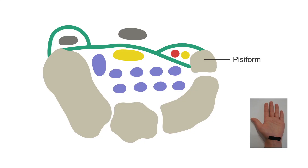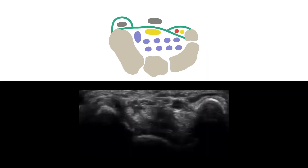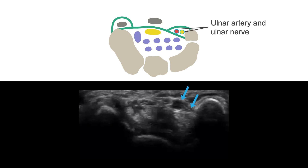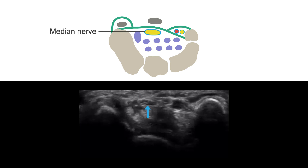Let's look at some important structures of the wrist. The pisiform is an important carpal bone used as a bony landmark to identify the median nerve in the carpal tunnel. Within the carpal tunnel, there are 10 structures: 9 tendons that we learned about in Chapter 2, and the median nerve. This is a transverse view of the median nerve on ultrasound. We can visualize many of these structures, including the pisiform bony landmark on the right, the ulnar artery and ulnar nerve to the left of the pisiform, the flexor carpi radialis tendon to the left of the image, the palmaris longus tendon, and finally the median nerve in the center.